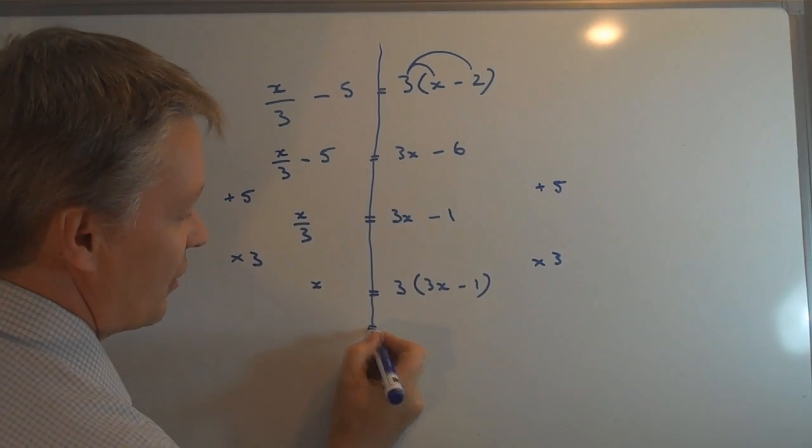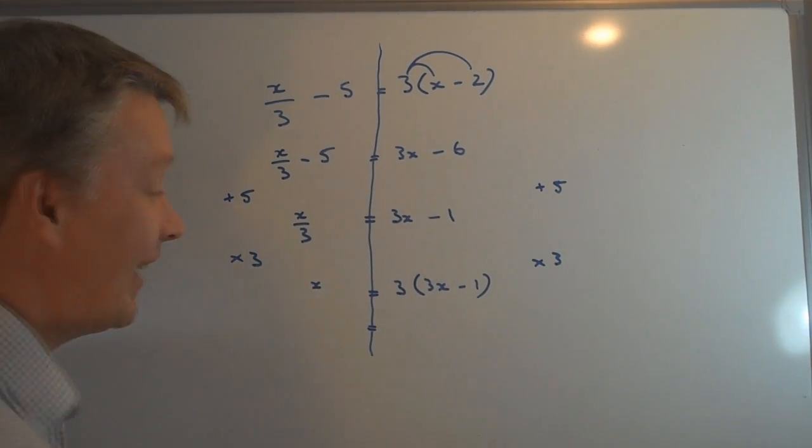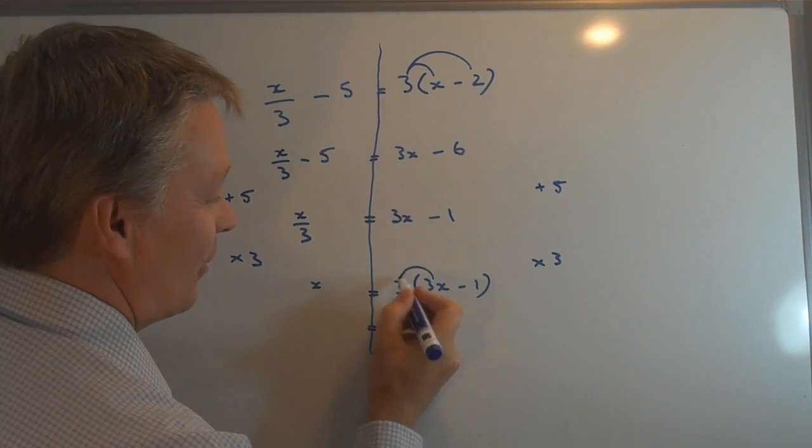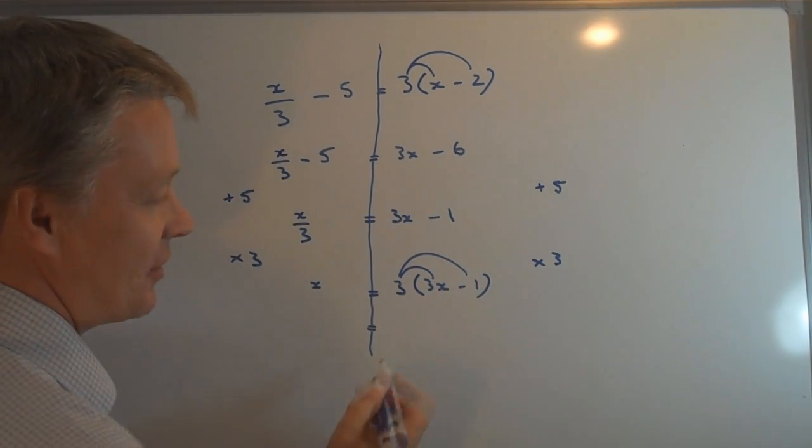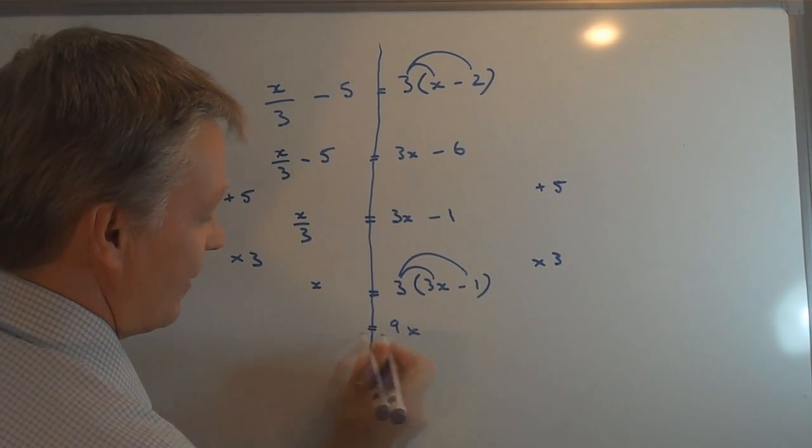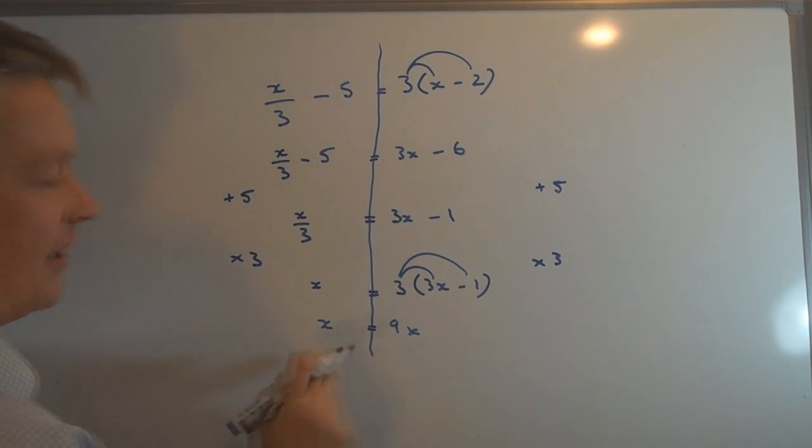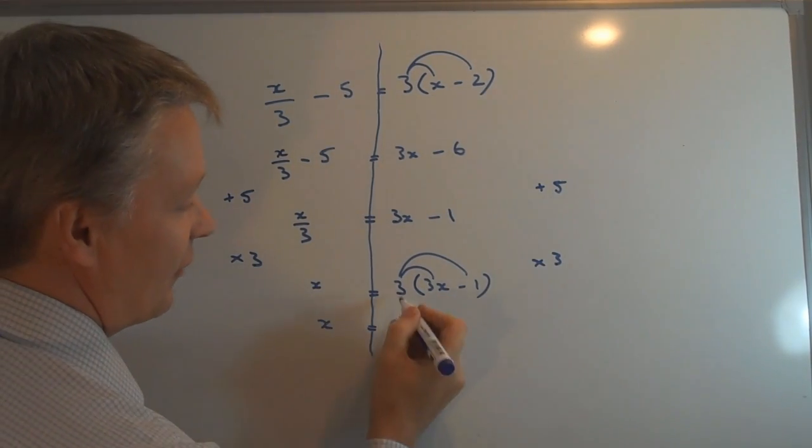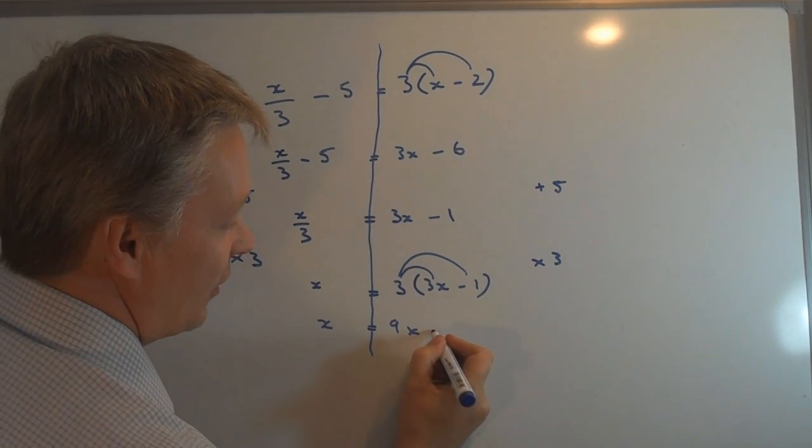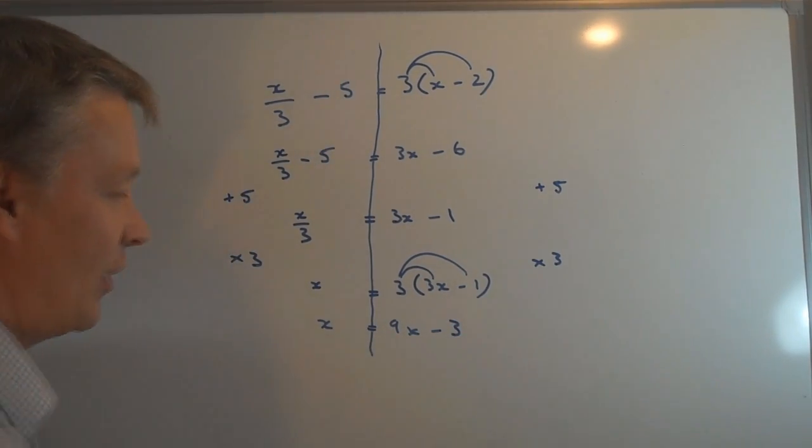So I'm now going to remove yet more brackets. If I multiply the first term and the second term, first term will be 9x. Still x this side, 9x, and on this side I've got 3 times minus 1 which is minus 3.